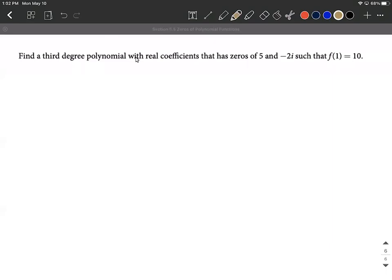Our goal is to find a third degree polynomial with real coefficients, and we're given a couple zeros. So we know that this polynomial is going to have the zeros of 5 and negative 2i, and we're also given that if you plug in a 1 into the function it should output a 10.